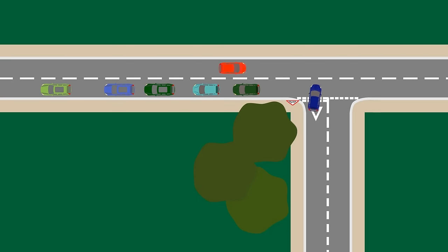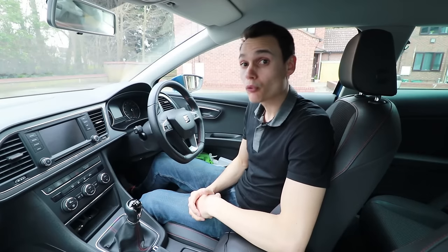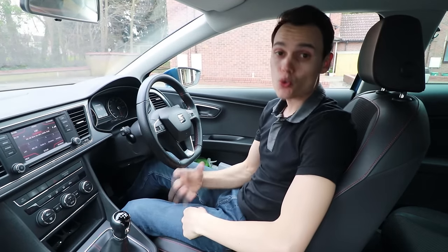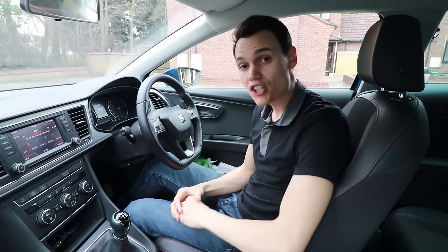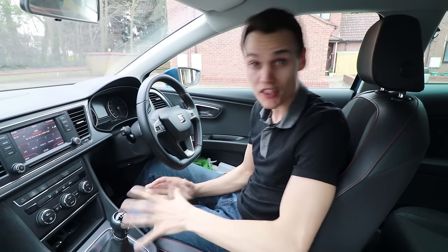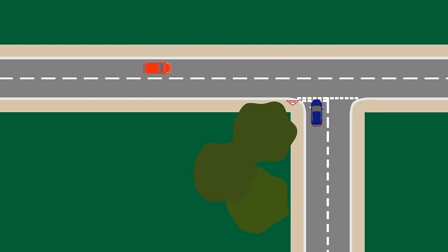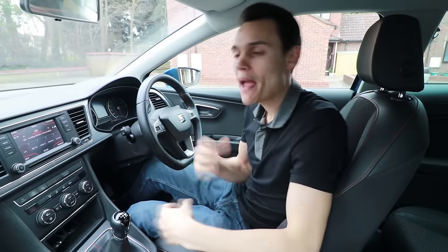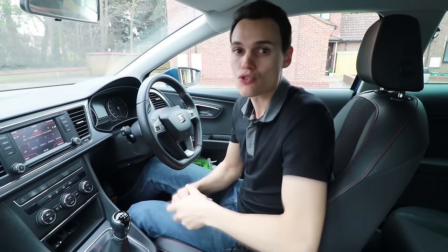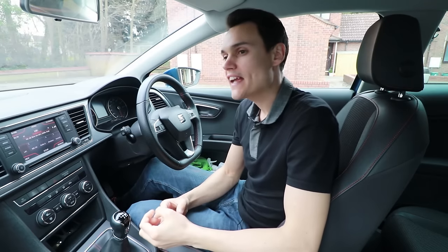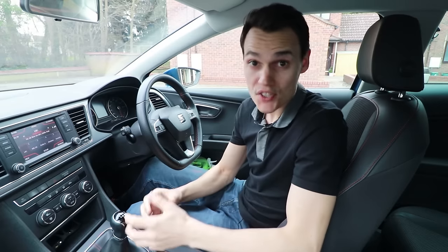You can also fail for observations at junctions if you decide to pull out in front of somebody — if you can see someone is coming and you decide to go and make them brake. Depending on how much you make them brake, that could be a driver fault or a serious driver fault. If it's a serious driver fault because you've made them brake a lot, you will fail. If you've only made them brake a little bit, you will most likely still pass unless you repeatedly do that.